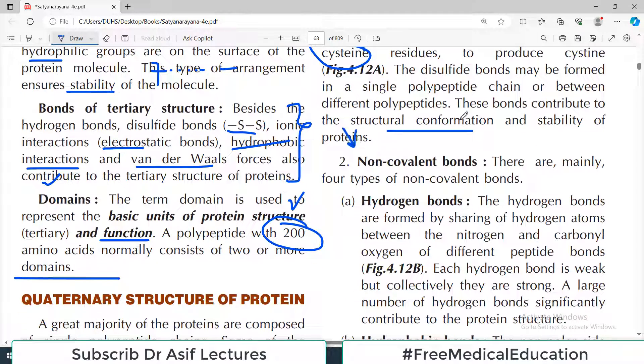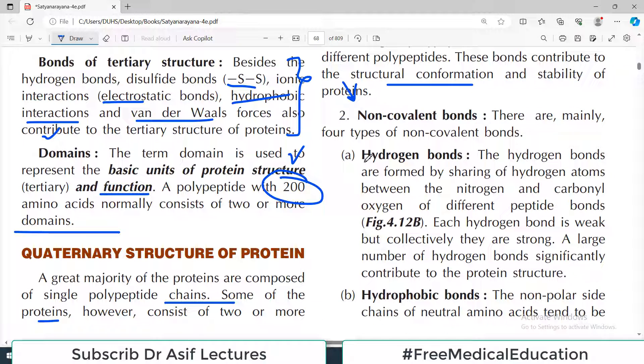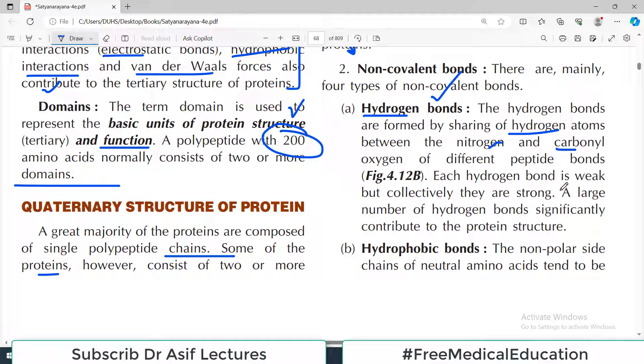Then there are many categories of non-covalent bonding. For example, there are hydrogen bonds. They are generated by sharing of hydrogen atoms between nitrogen, carbonyl oxygen, and different atoms. The hydrogen atoms are shared, therefore it is known as a hydrogen bond. A single hydrogen bond may be weak, but overall they make good, strong strength to the protein.